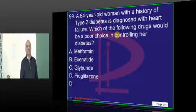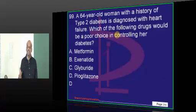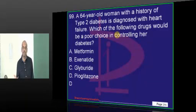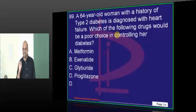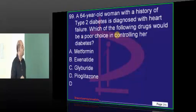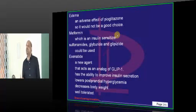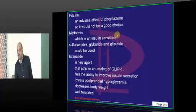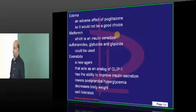Pioglitazone — why would you give pioglitazone? Suppose the secretagogues like sulfonylureas, even at high doses, are still not controlling sugar — that means there is some level of insulin resistance. To overcome that resistance, we add a small dose of pioglitazone. However, pioglitazone has been proven to cause edema and cardiovascular instability. Therefore, in any patient who has congestive heart failure, you need to be cautious about administering pioglitazone.